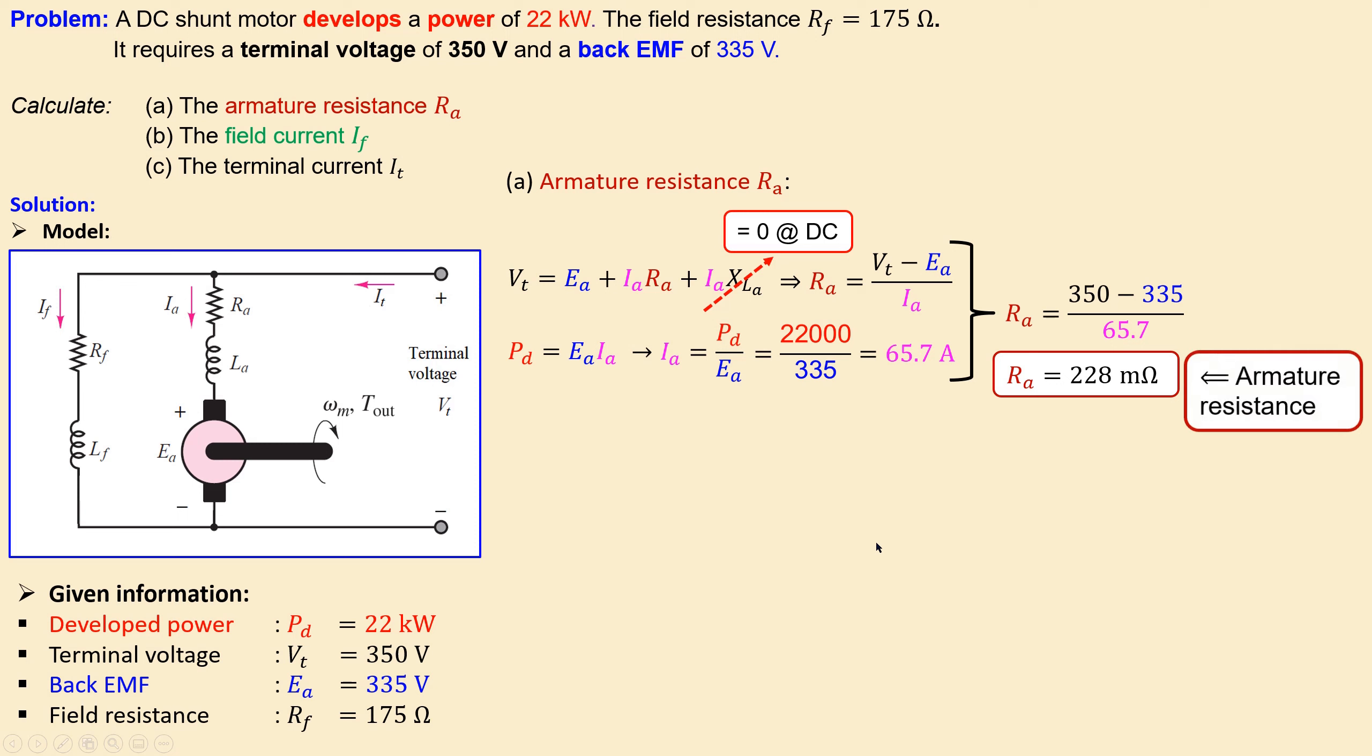That's for question A. Now that's the armature resistance. Moving on to the field current.